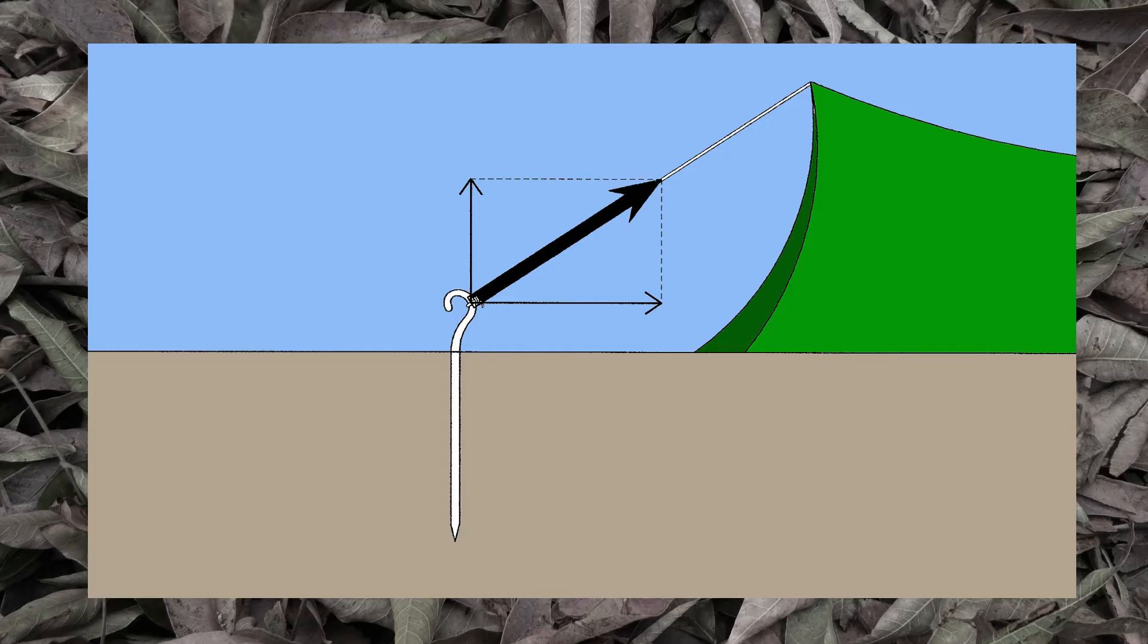However, the guy line is also trying to pull the stake straight up. Once a few wind gusts loosen the tent stake, the upper component of the guy line pull can slide your tent stake out of the ground. A steady pull will accomplish the same result right away if the pull is strong enough. You can see that happening at the start of the video.